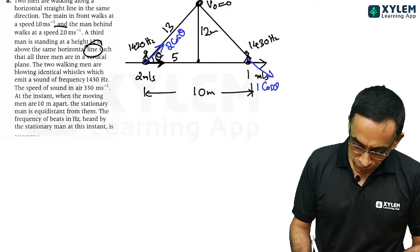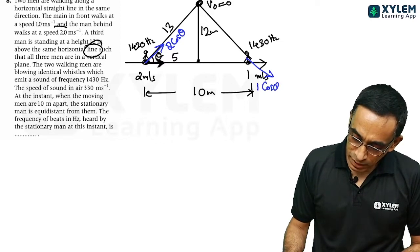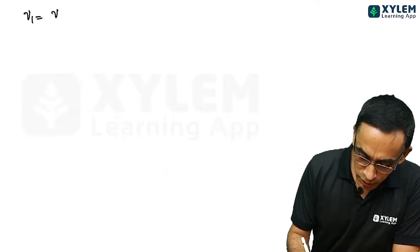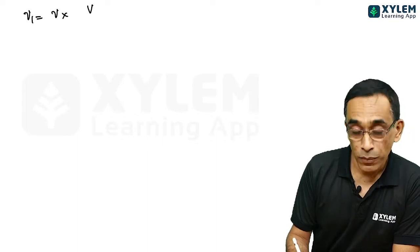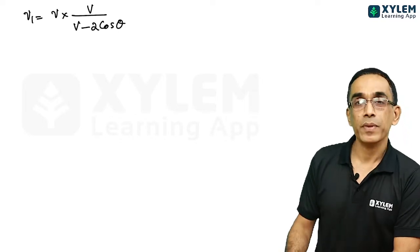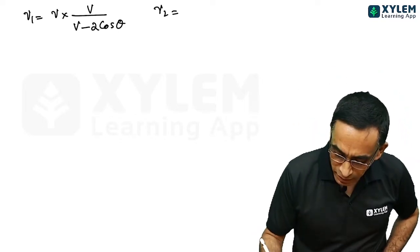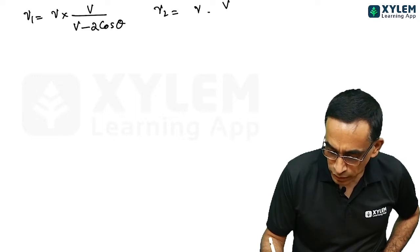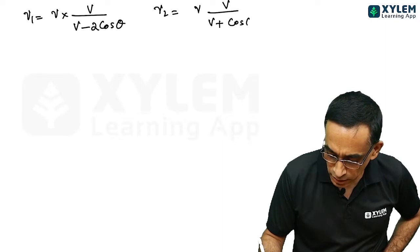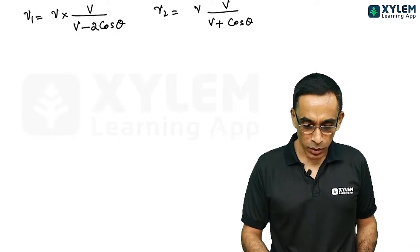So the frequency from the first man. I hope you can memorize the picture. Frequency of the first man will be equal to original frequency into speed of sound divided by v minus 2 cos theta. Doppler effect equation. Second person is leaving the observer. So nu into v by v by v plus cos theta. 1 cos theta. 2 cos theta and 1 cos theta.